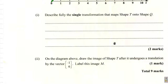It says: on the diagram above, draw the image of shape T after it undergoes a translation by a vector negative 1, 6, and label it M.